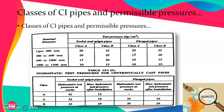The classes of CI pipes. CI pipes are categorized based on their ends — whether they have socket and spigot ends or flanged ends — and are subdivided into Class A and Class B. A table represents the different diameters and the test pressures these pipes must sustain. For up to 300 mm diameter, Class A must sustain a pressure of 20 kg/cm² for socket and spigot pipes, while Class B must sustain 25 kg/cm². As diameter increases, the test pressure generally decreases. The second part of the table provides hydrostatic test pressures for centrifugally cast pipes.